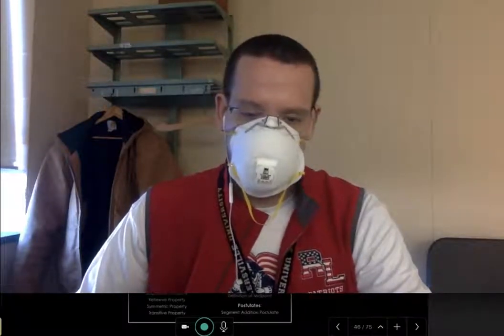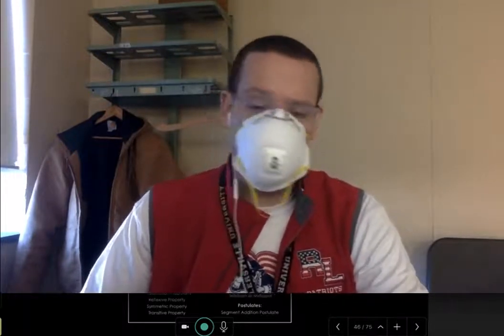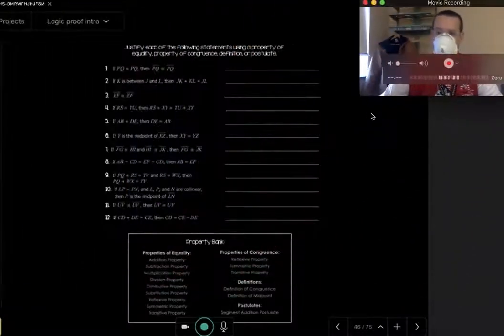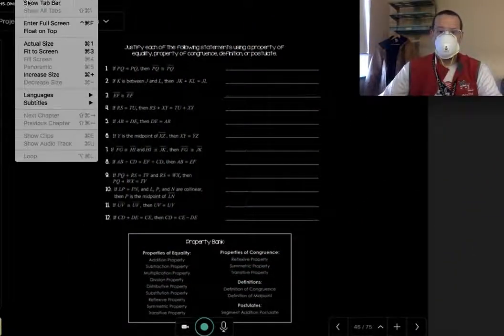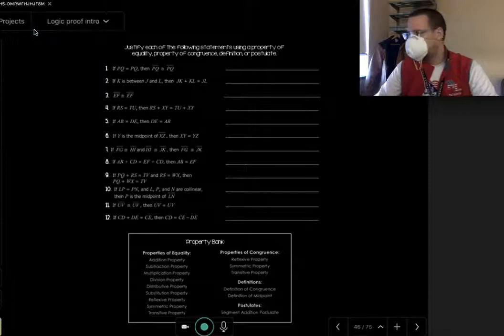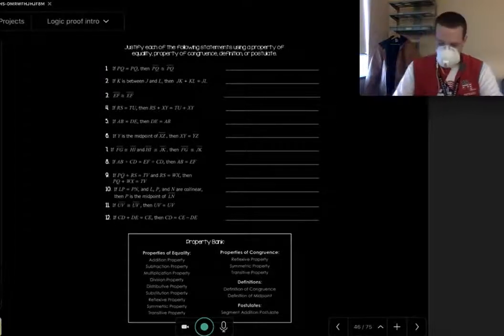Just remember that segments, angles, triangles, any figure, those figures have congruencies. They do not have equalities. However, whenever you're dealing with a measurement, whenever you're dealing with a number, the number has the property of equality. And so what we're going to do is really just look at how these work together.